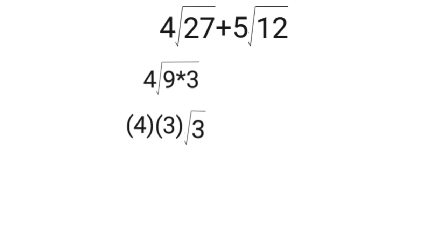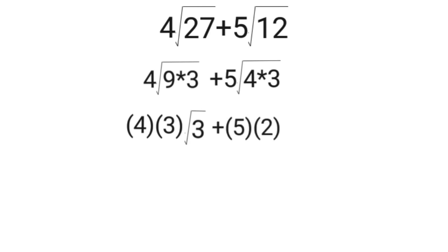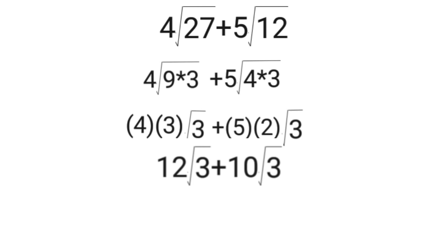Now we have 12 square root of 3 plus 10 square root of 3. They have the same index and same radicand, so just add their coefficients. 12 plus 10 is 22. The final answer is 22 square root of 3.